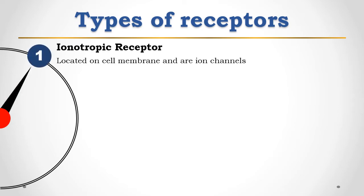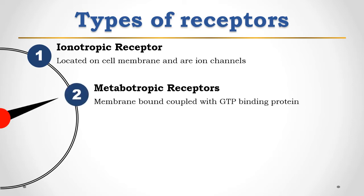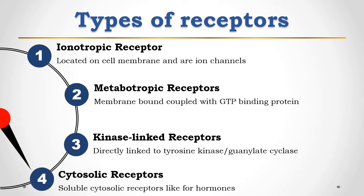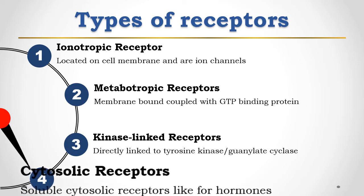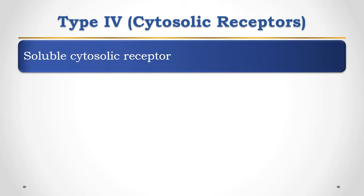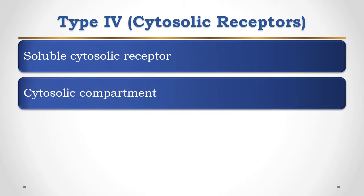The four types are: first, ionotropic receptor; second, metabotropic receptor; third, kinase-linked receptors; and fourth, cytosolic receptor. Today we are explaining about cytosolic receptors. Cytosolic receptors are soluble receptors — examples include steroid hormone receptors, thyroid hormone receptors, and vitamin D receptors.